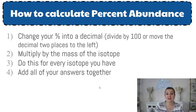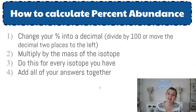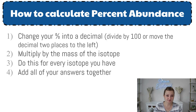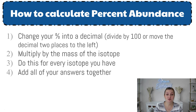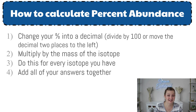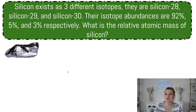And we have to do this in a mathematical version. There are four steps to calculating the percent abundance of isotopes, and it's super easy. First: change your percentages into a decimal. Then you're going to multiply by the mass of the isotope. You do this for each isotope and then add them together, and you're done. So it really is that simple.